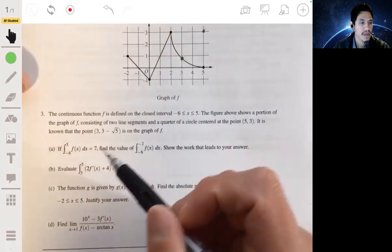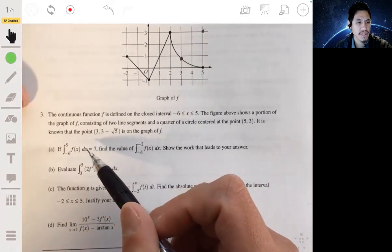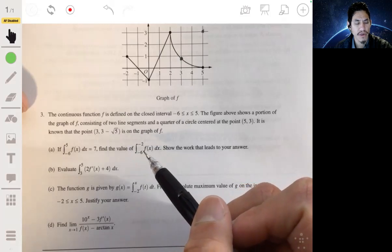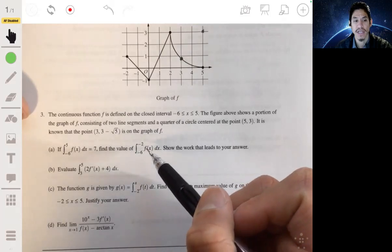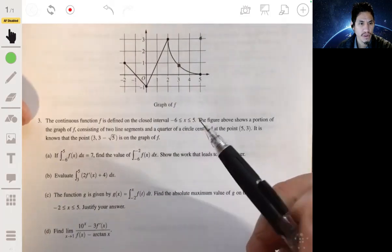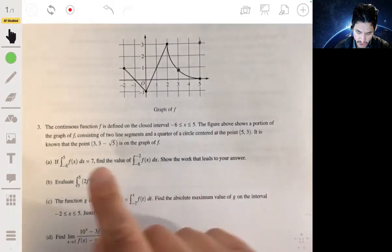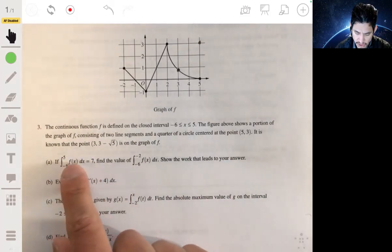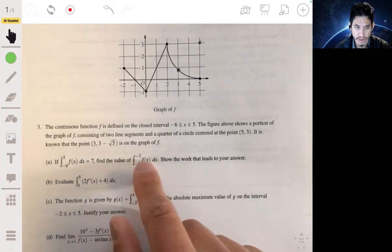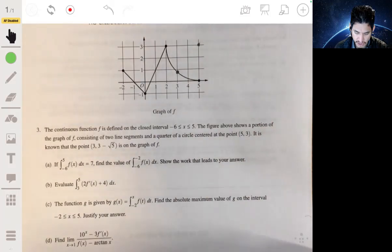Okay, so part a. If we know that the integral from negative 6 to 5 of f(x)dx is 7, then find the value of the integral from negative 6 to negative 2 of f(x)dx, and got to show the work. So here's the strategy: you want to basically use this and the value 7 to figure out this.